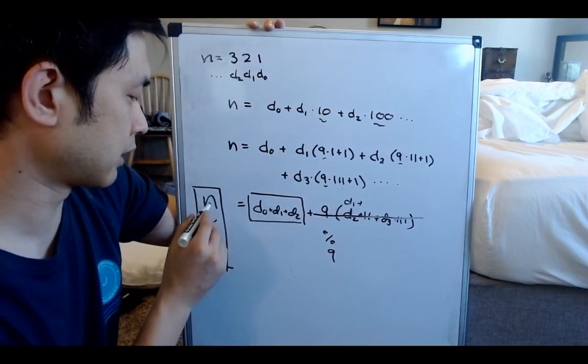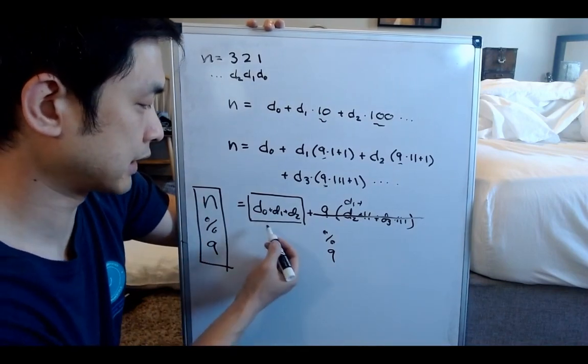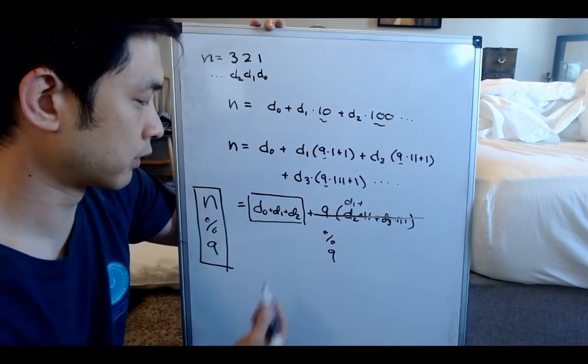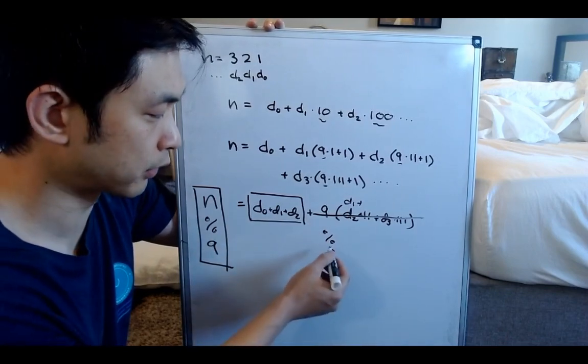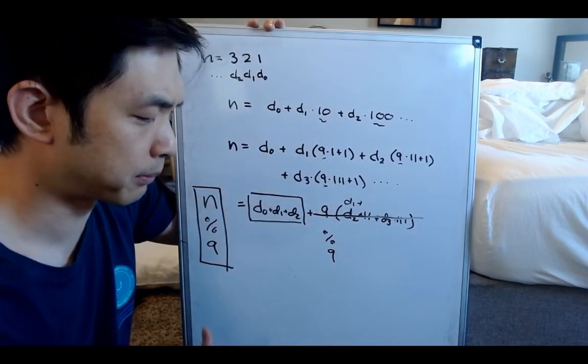And interestingly, N modular 9 is equal to the numbers added up. And we were able to figure that out with this kind of complex equation.